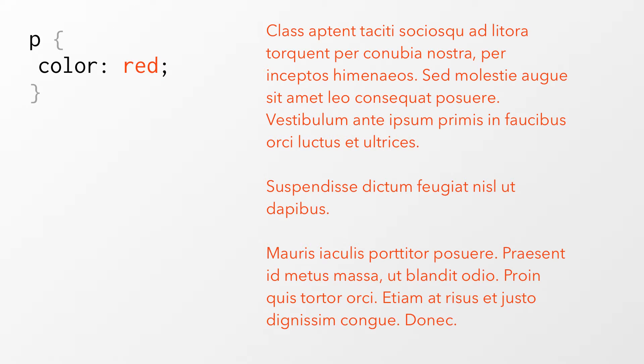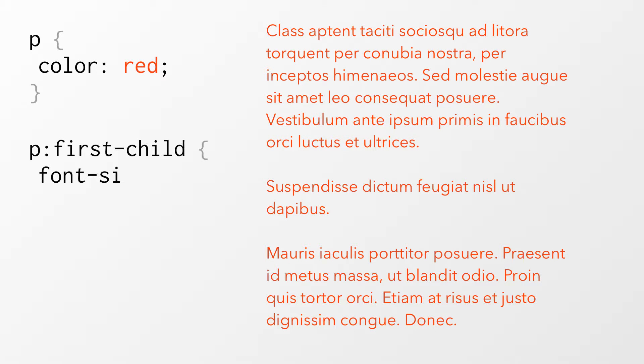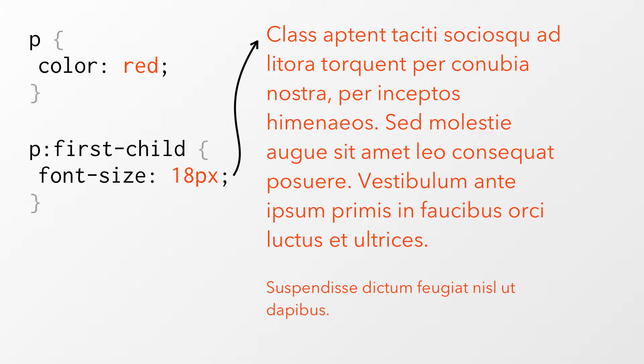The second way that style sheets cascade is similar to the first, just a little reversed. One HTML tag can be affected by many styles in different ways. Consider our red paragraphs — if we wrote a style later on down in the style sheet that targeted just that first paragraph and changed it to 18 pixel font size, then we would have a paragraph that's both red and 18 pixels. Cascading.